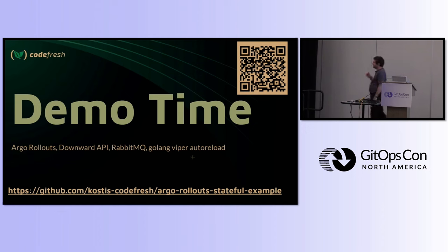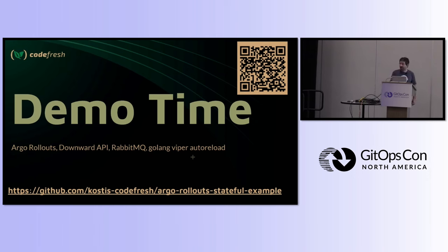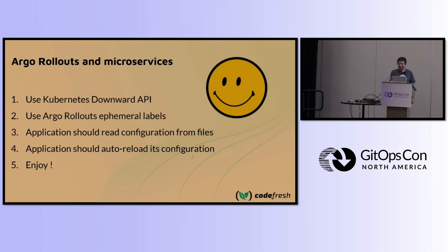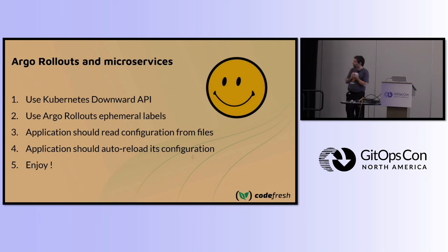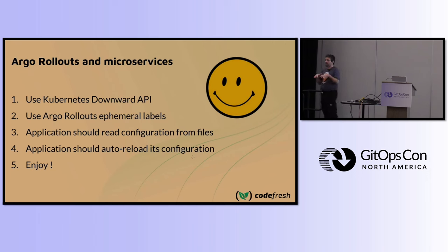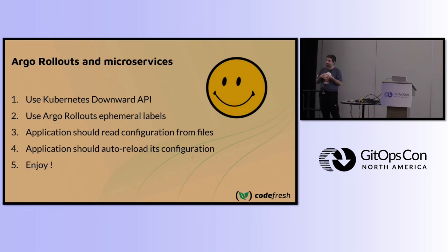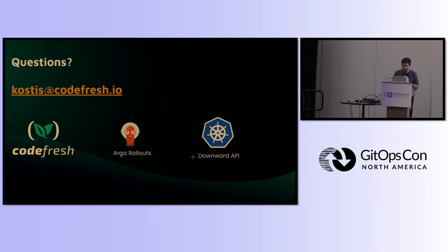You can find all the code at the URL shown. I used RabbitMQ but you could do the same with Kafka and other microservices — frontend/backend, MySQL, whatever. The example is in Go. Summary: it is possible to use Argo Rollouts with microservices. The key components are: the Kubernetes Downward API to mount labels as files, Argo Rollouts managing labels automatically, and developers making the application auto-reload configuration when files change. With all these components, Argo Rollouts works in most microservice scenarios.